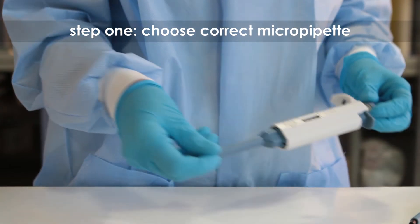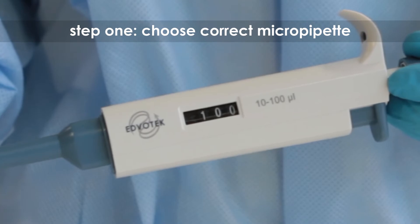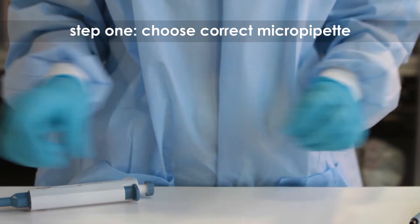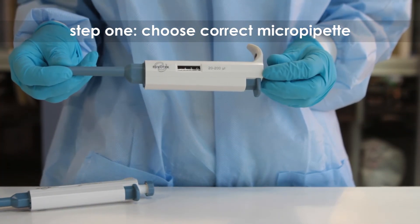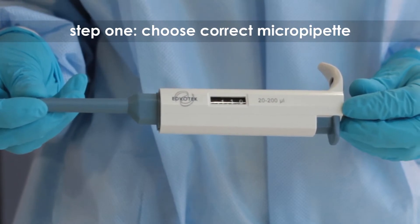Step 1. Choose the correct micropipette for the volume you are measuring. Make sure that the volume to be measured does not exceed the upper or lower volume setting of the micropipette.